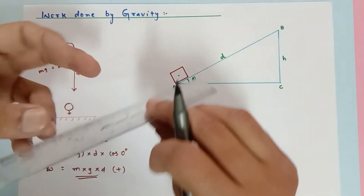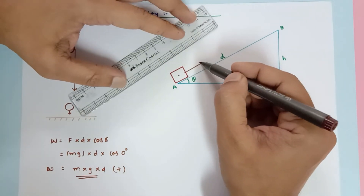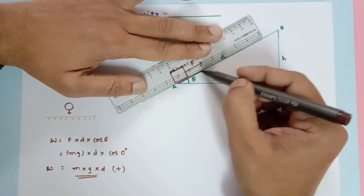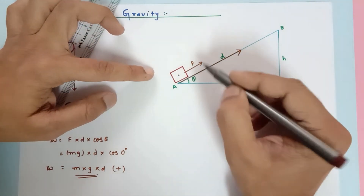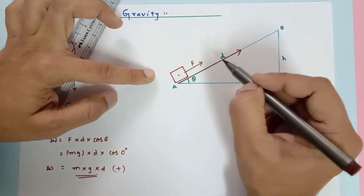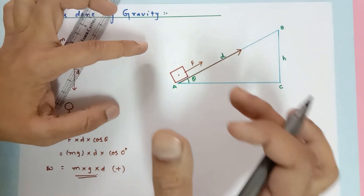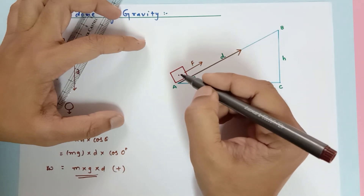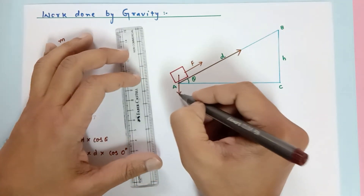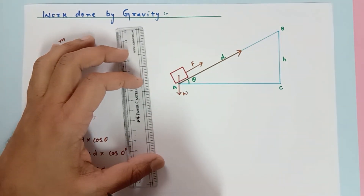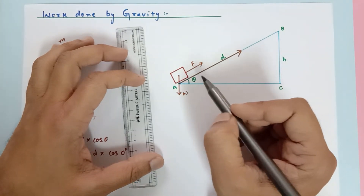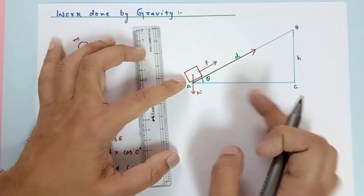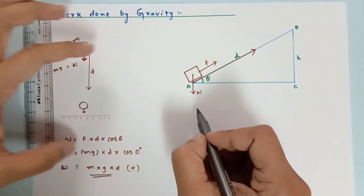Here a block is being pushed by us horizontally on a surface. Force and displacement are both horizontal, so work done by us = F × d × cos 0° = Fd. But if we ask for work done by weight: weight acts downward, displacement is horizontal, angle between them is 90°.